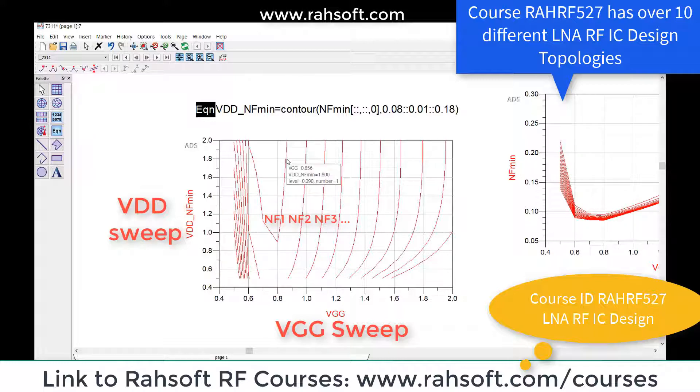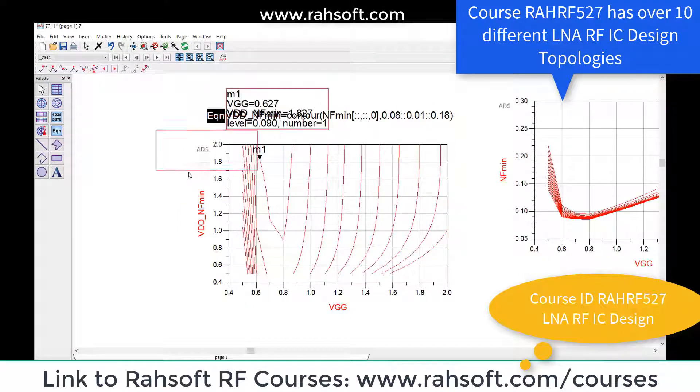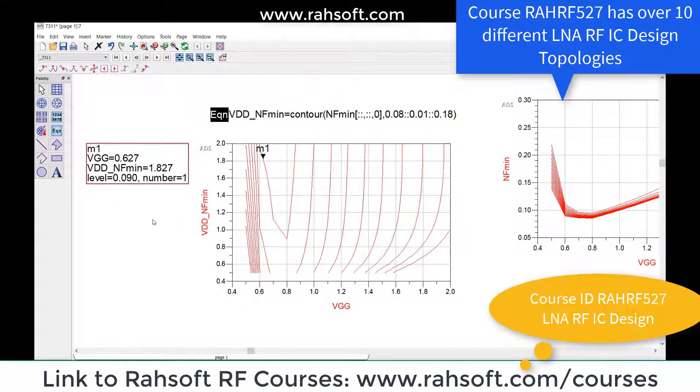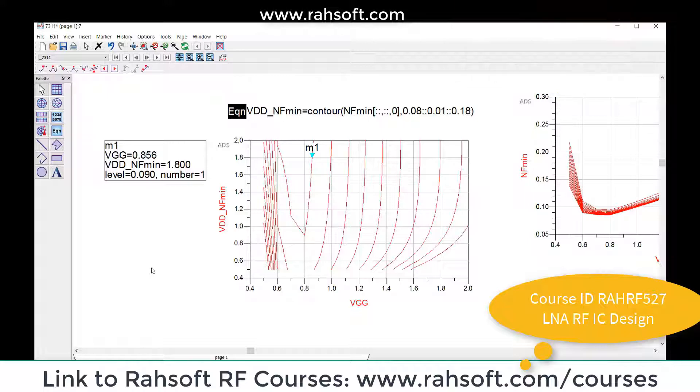I'm going to show it. Maybe this point - I have the marker here. As you see, this is my contour and this is a very good point for me to choose. For example, here I have a VGG of 0.856 and my VDD is 1.8, which is quite suitable.